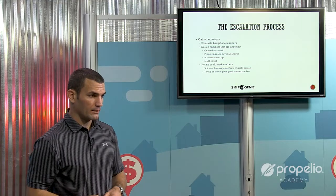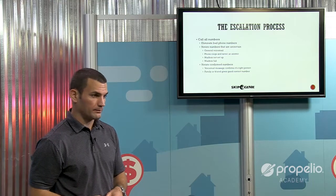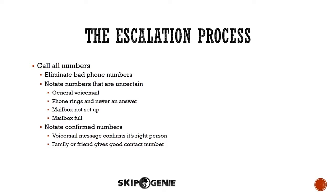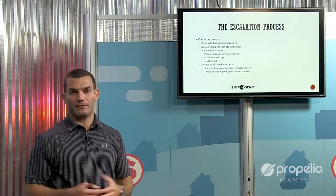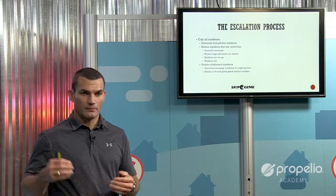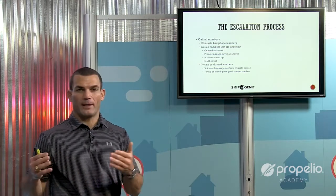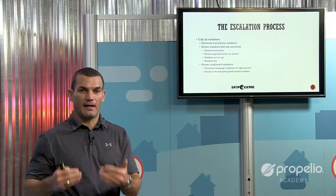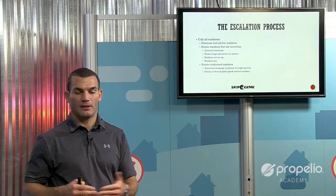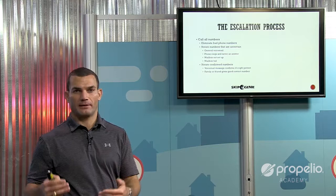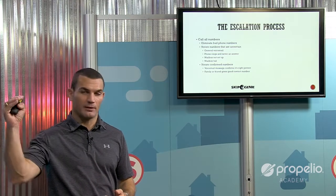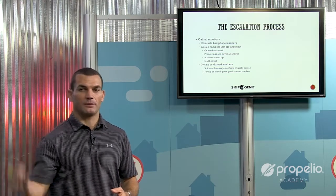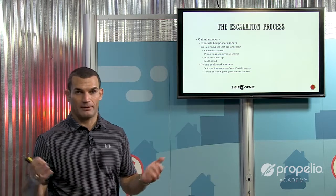So in this process, the first thing you're doing is making phone calls. On these skip trace reports, you get a lot of phone numbers sometimes. A lot of people may have four or five numbers, and others are going to have 10 to 15 phone numbers. Sometimes you're just going to have to dial and dial. You never know if the good number for a person is going to be the first one on the top of their list or at the bottom.